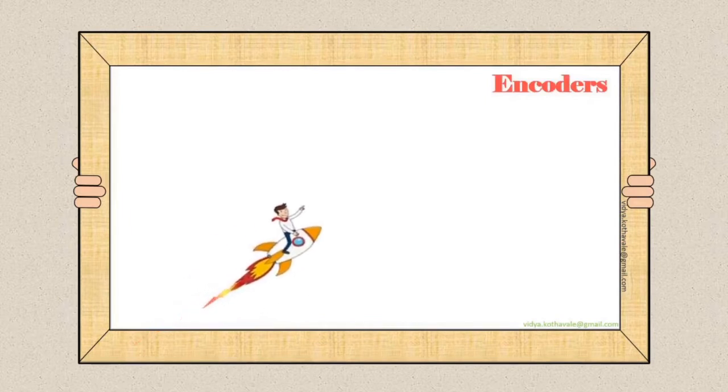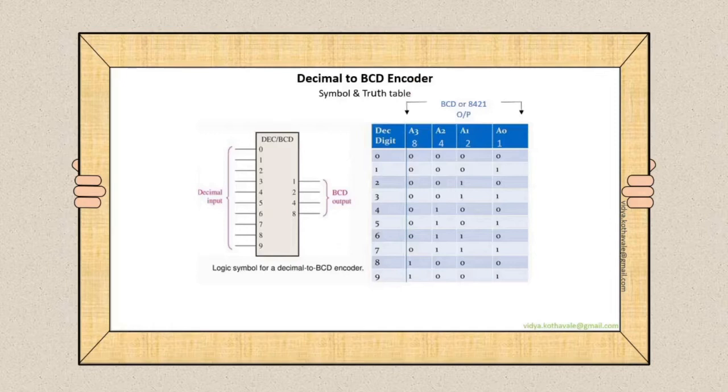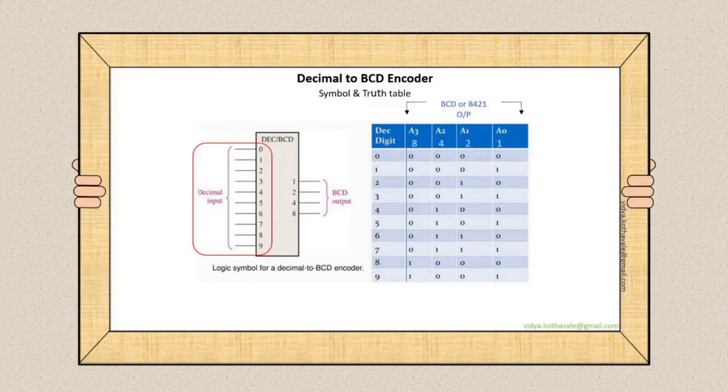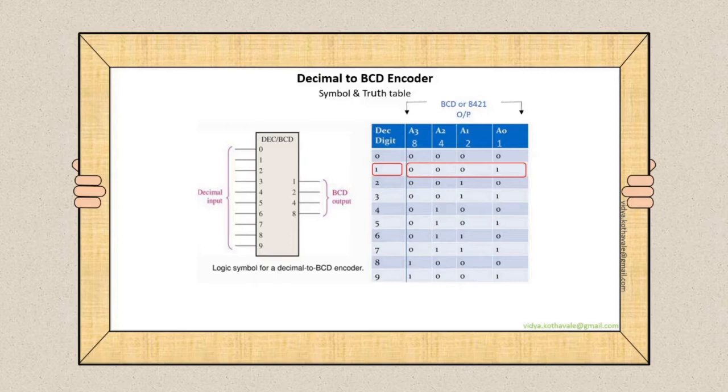Let's study the various types of encoders. Decimal to BCD encoder: The symbol, as the name implies, consists of decimal input digits 0 to 9, that is 10 input lines, and BCD output, that is 8421 code. If decimal input line 0 is activated, then we get an output 0000. If decimal input line 1 is activated, we get the corresponding BCD output 0001, and so on.